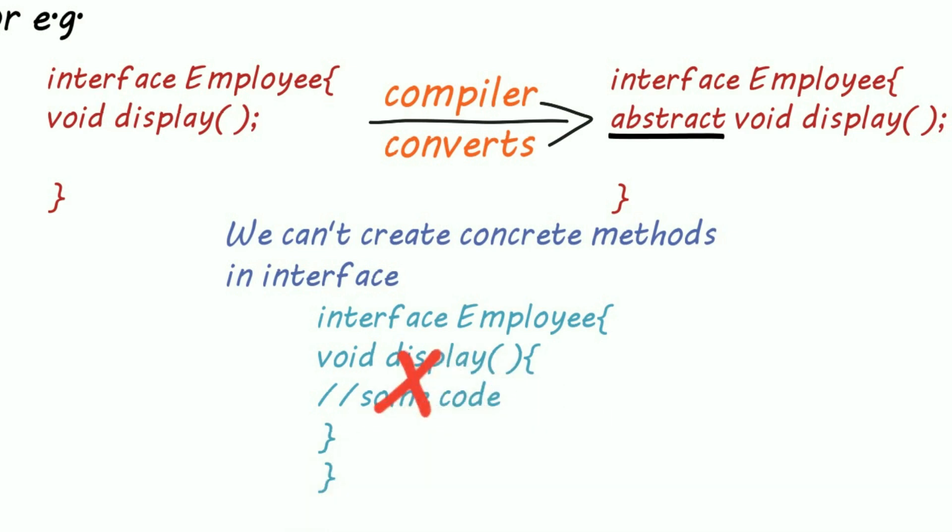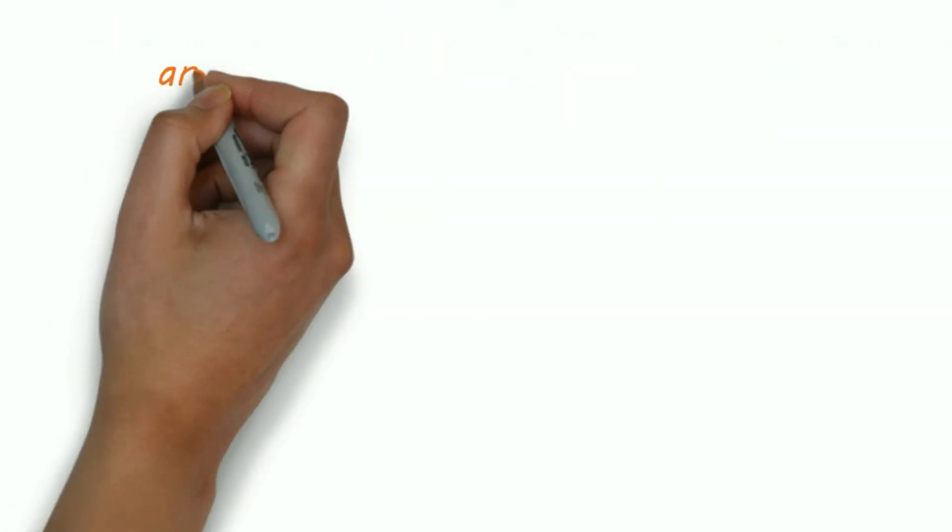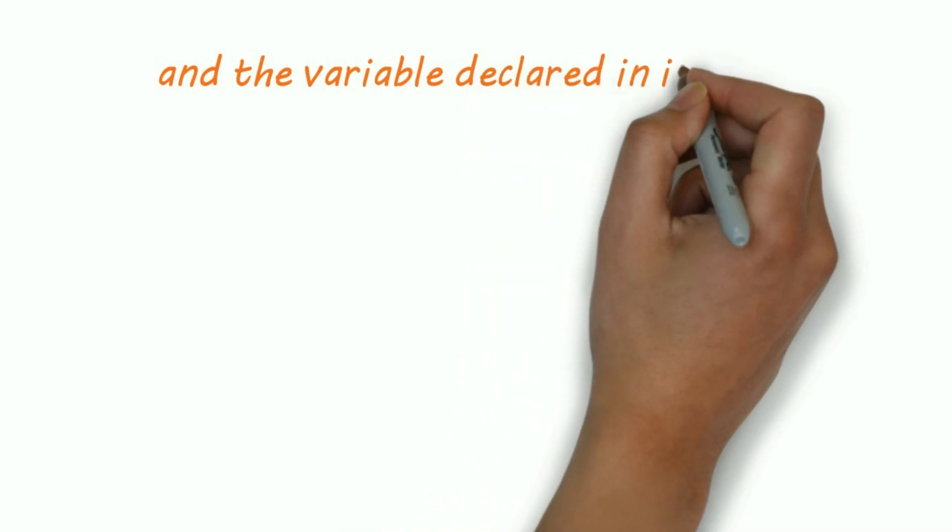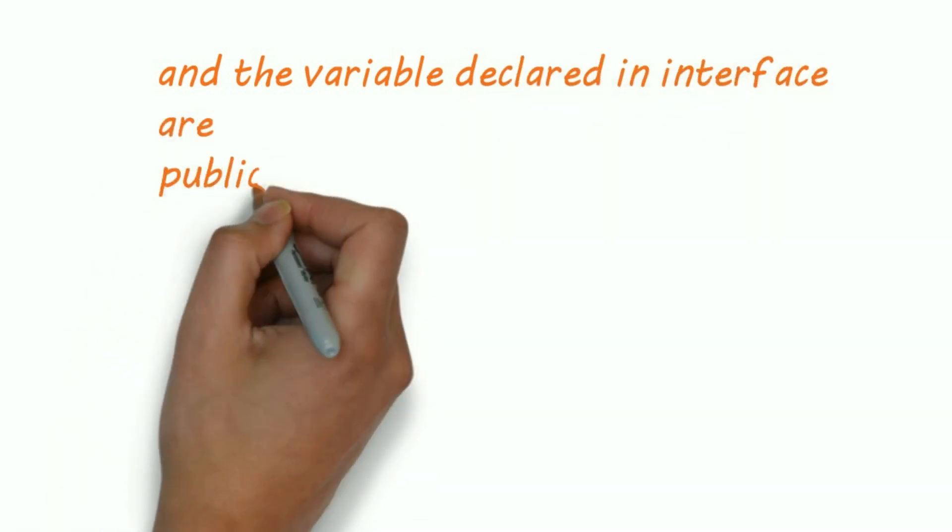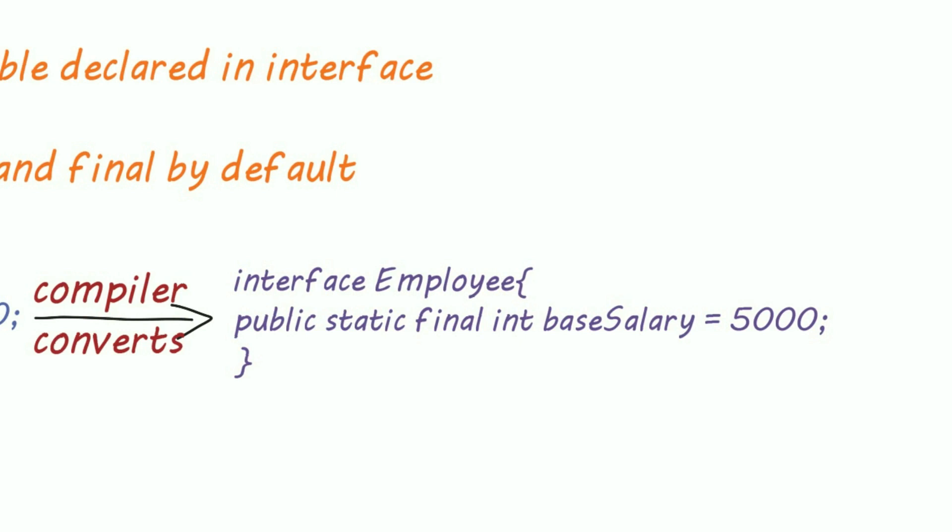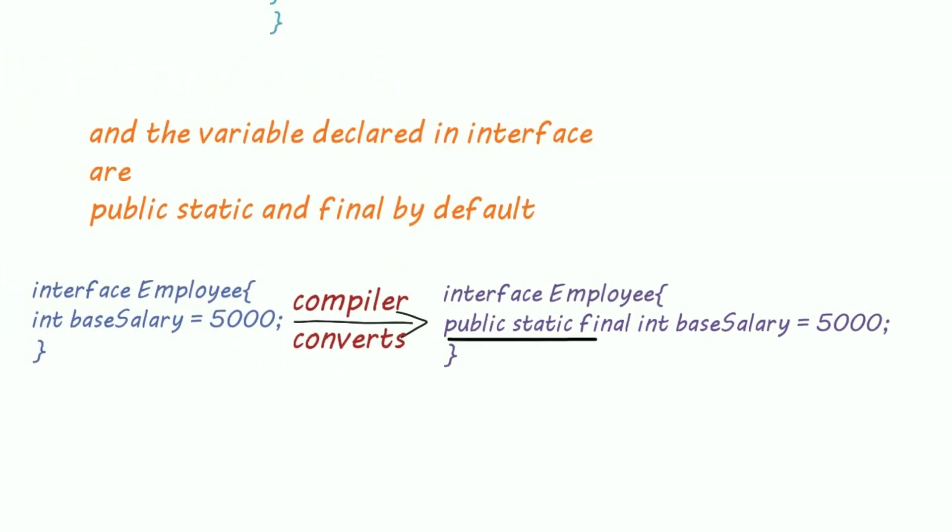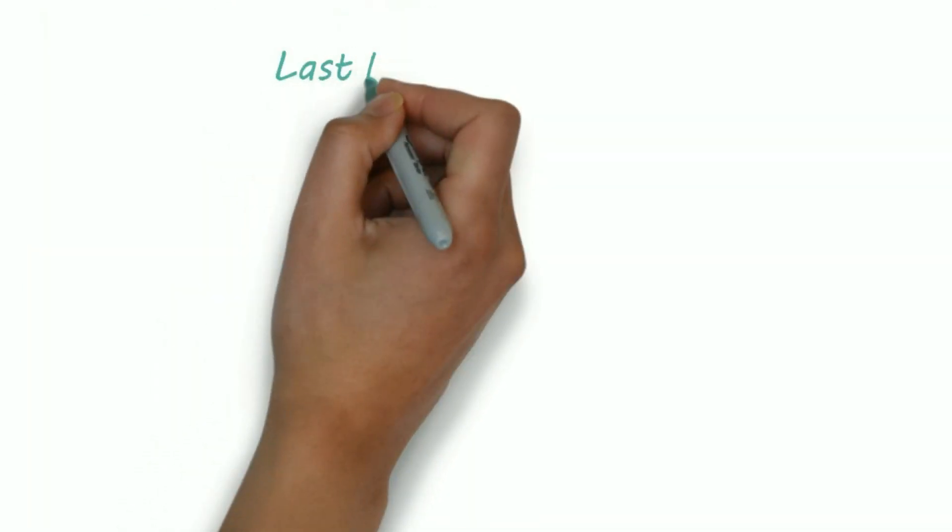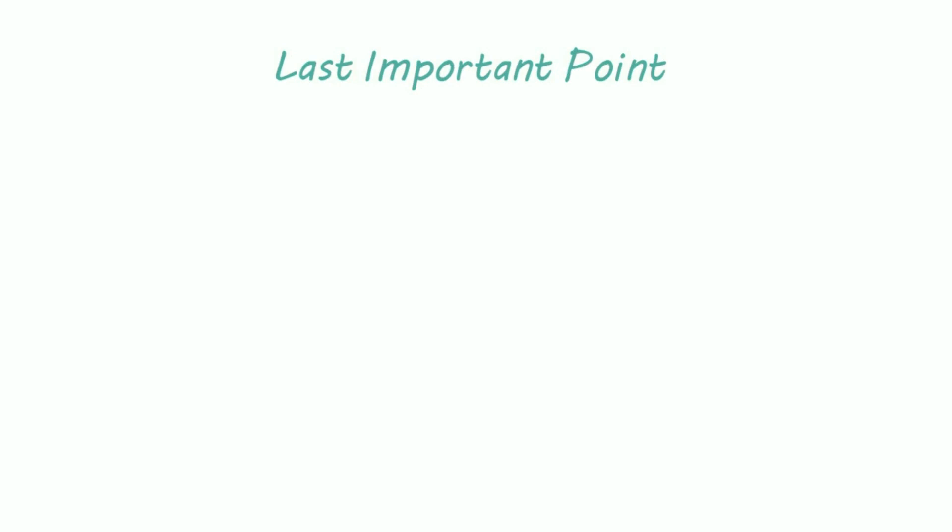Only abstract methods are allowed. And the variables declared in interface are public static and final by default. Suppose I created a variable as int base salary, so compiler converts it into static final int base salary. And the last important point is while inheriting an interface we can't use extend keyword. Extends is for class and for interface we have implement.